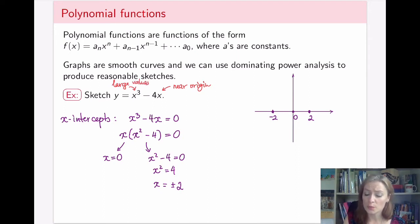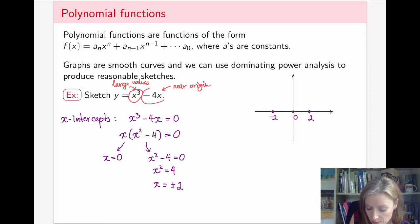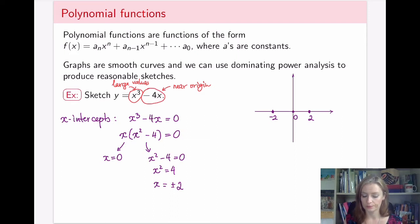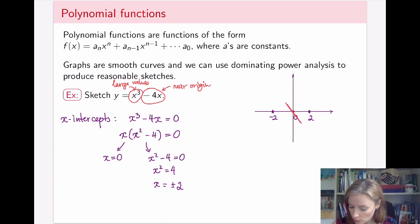It is important to capture the behavior with the correct sign. X cubed will dictate behavior for large values of x, and minus 4x will dictate behavior near the origin. So looking at minus 4x on its own — what does that look like? It's a line with a negative slope of minus 4.